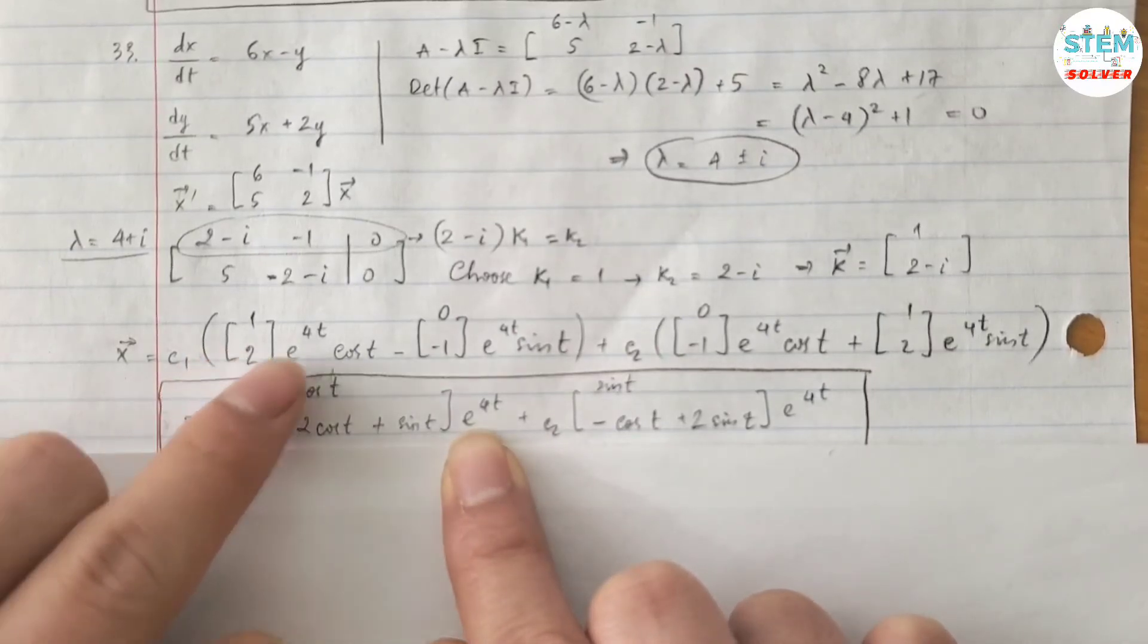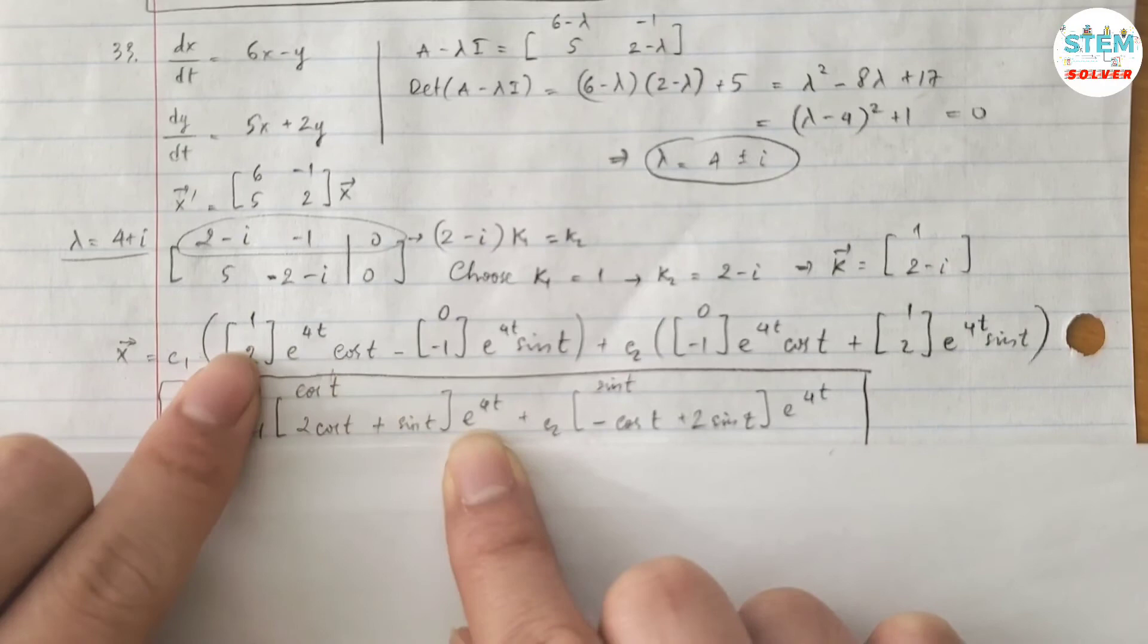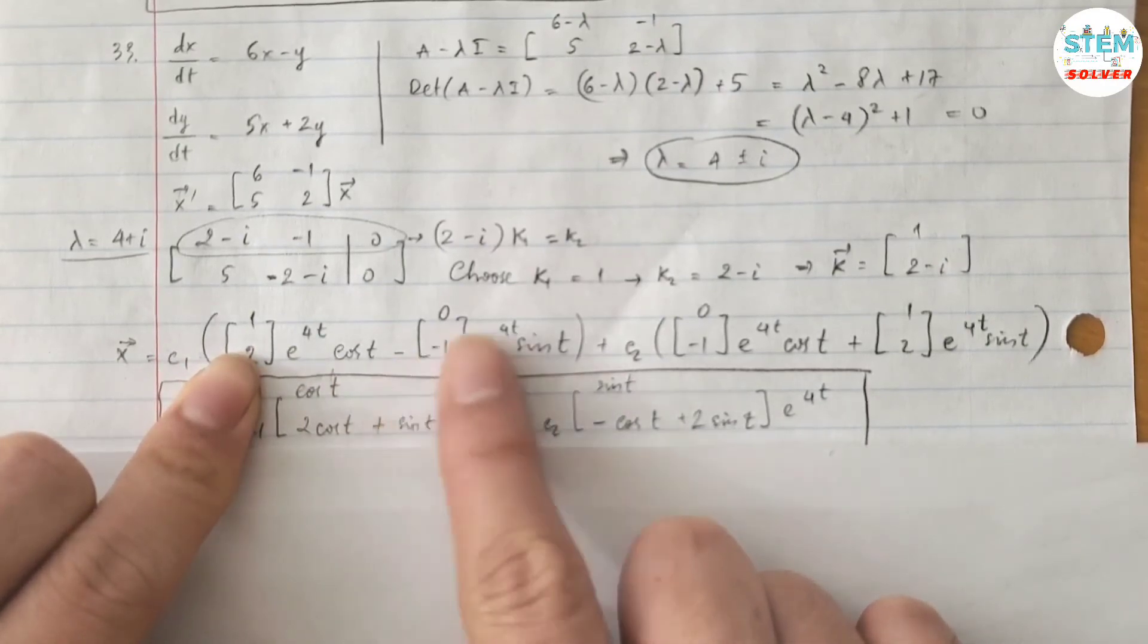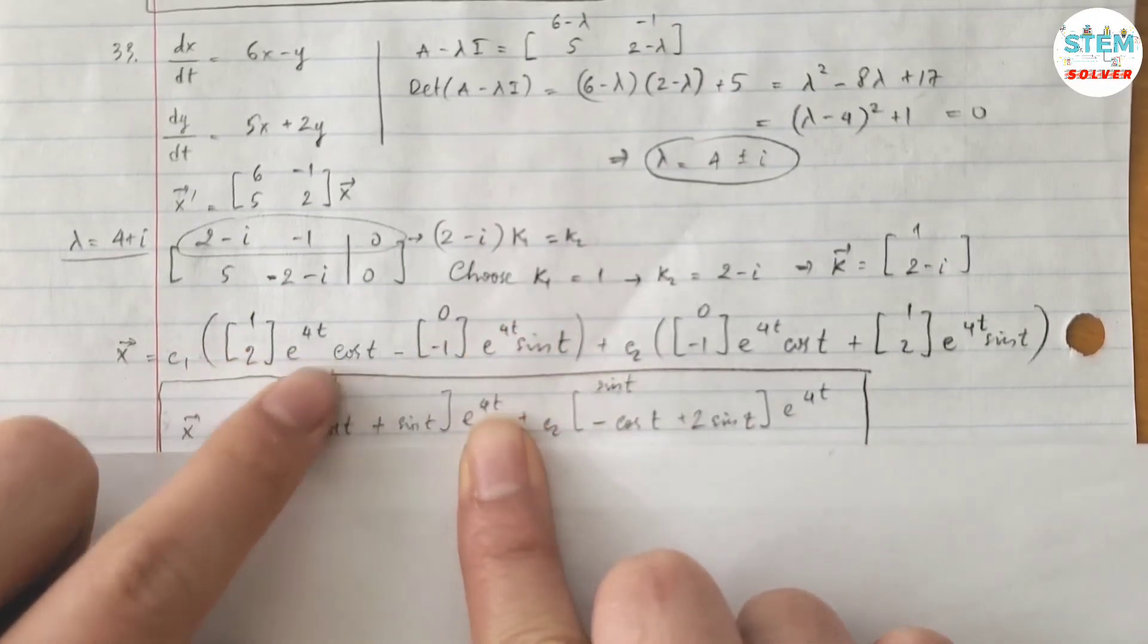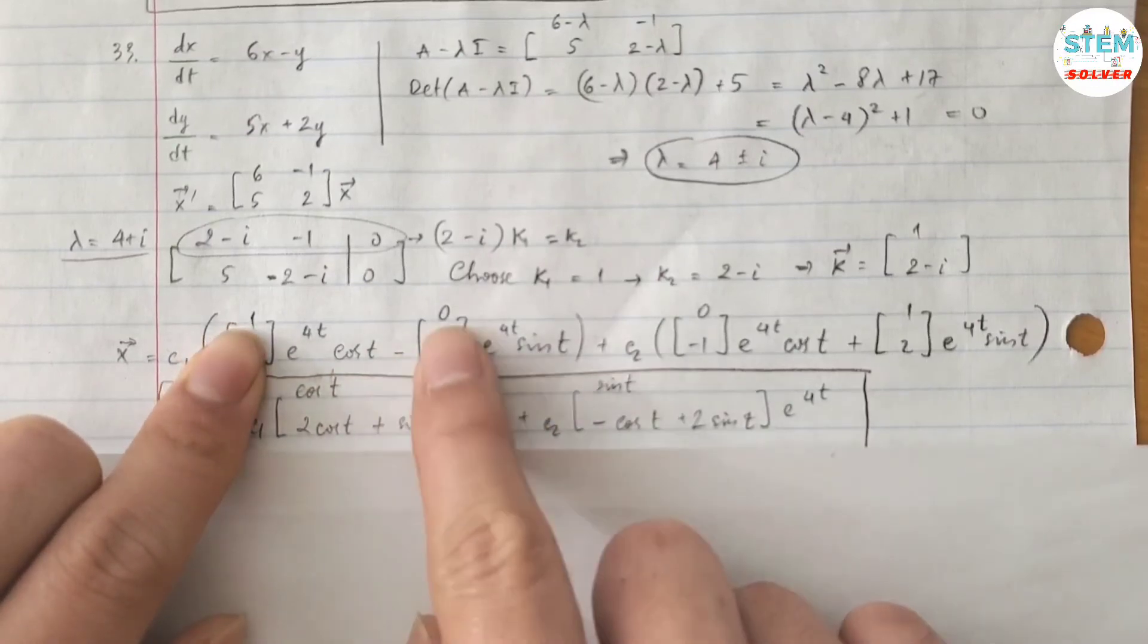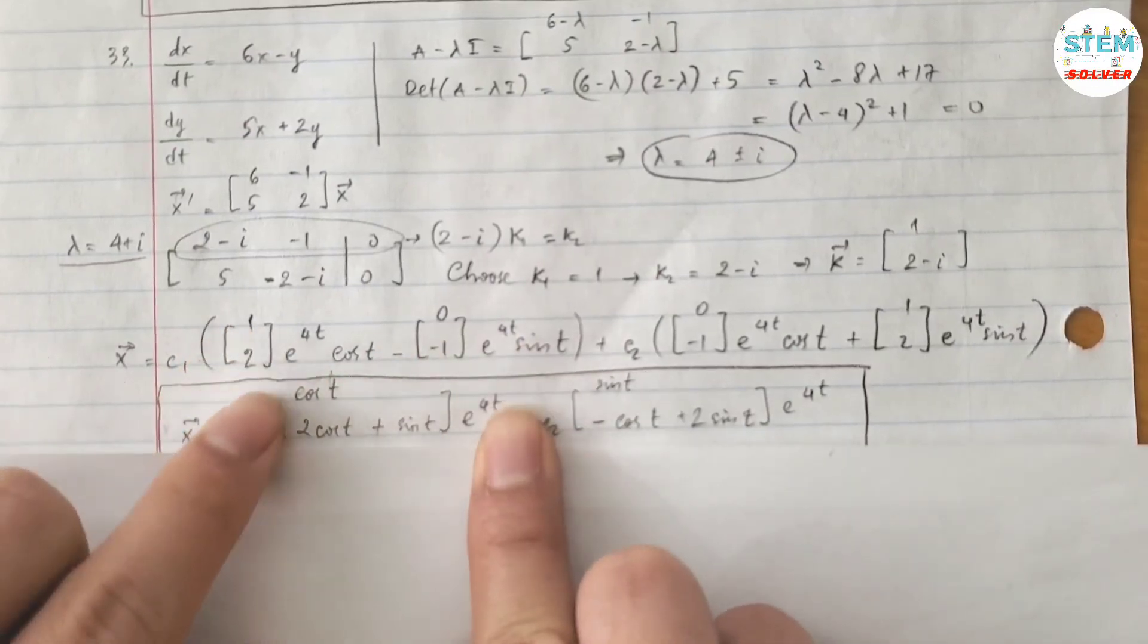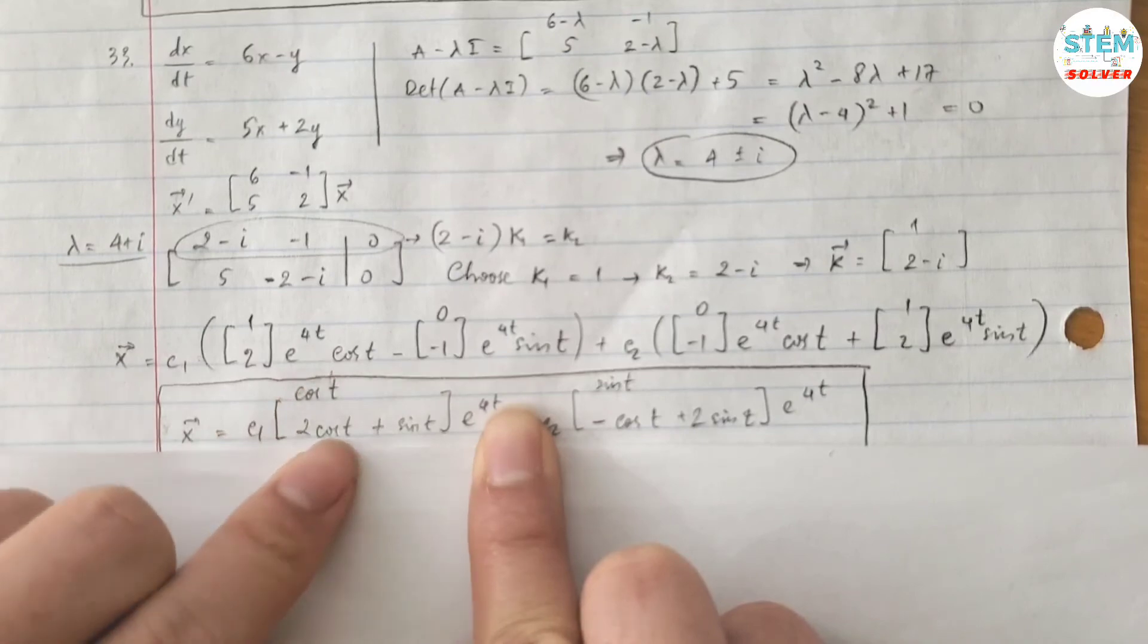And for this one, if I distribute this into a matrix and do an operation here I have cos(t) times 1, which is cos(t), minus 0, which is cos(t). 2 times cos(t), which is 2cos(t), minus -1 times sin(t), which gives me positive sin(t).